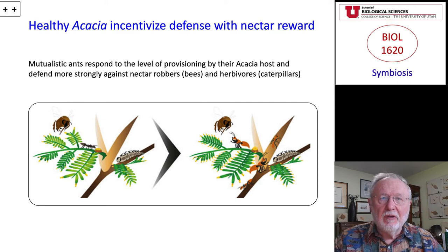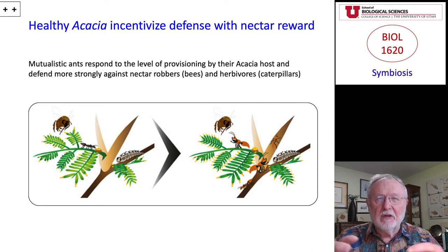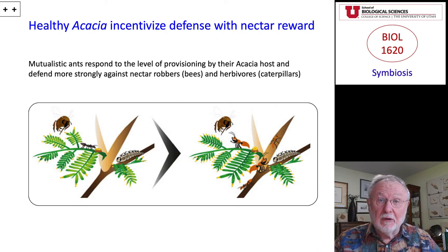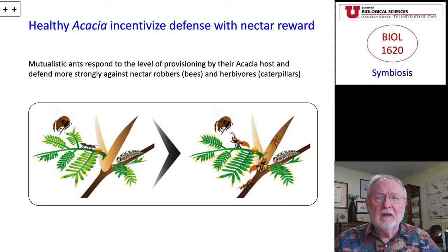This is a co-evolutionary relationship that has emerged over many thousands and tens of thousands of generations — a relationship in which the ant benefits by getting a resource and a home, and the plant benefits through reduced rivalry and a reduction in the number of competitors.